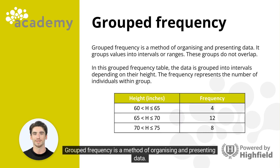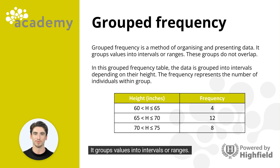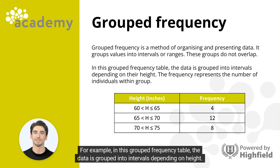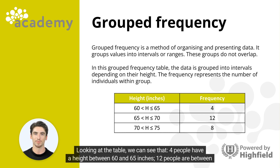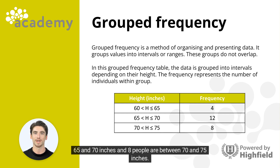Grouped frequency is a method of organizing and presenting data. It groups values into intervals or ranges, and these groups or classes do not overlap. In this grouped frequency table, the data is grouped into intervals depending on height. Looking at the table, 4 people have a height between 60 and 65 inches, 12 people are between 65 and 70 inches, and 8 people are between 70 and 75 inches.